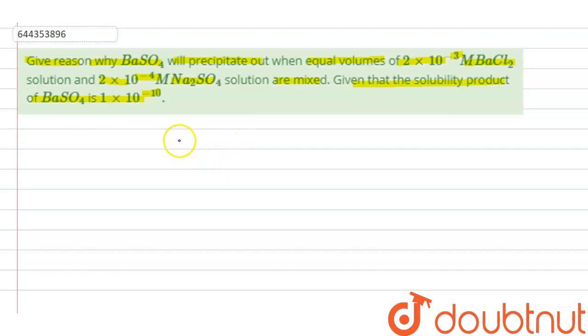Now, from the given question, the concentration of barium chloride will be equal to the concentration of barium ion, which is given as 2×10⁻³ M. Similarly, from sodium sulfate, we will obtain only one sulfate ion and hence the concentration will be the same, 2×10⁻⁴ M.